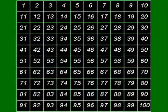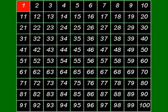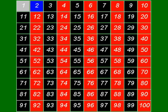First, we know 1 is not a prime number and we remove it from the list. 2 is divisible by itself and 1 only, hence it is a prime number. But all other multiples of 2 are not prime numbers because they are multiples of 2 and also even numbers.